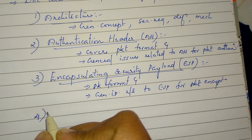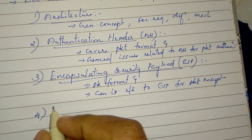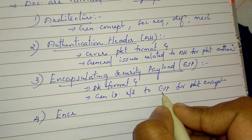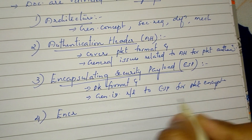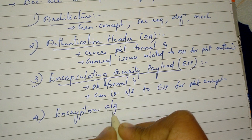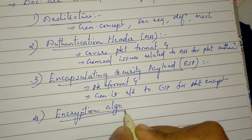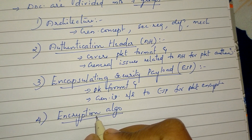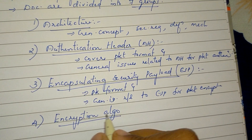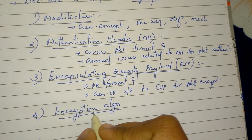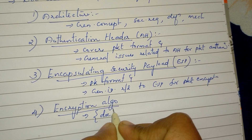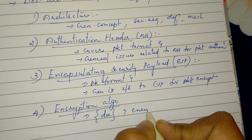The fourth group is the Encryption Algorithm — a set of documents which describes how various encryption algorithms are used.